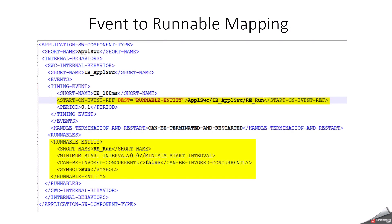This is a simple example of how event-to-runnable mapping can happen. Here I have an application software component internal behavior, and there is a periodic timing event called every 100 milliseconds, with one runnable entity associated with the timing event. I have named it 're_run'. So the event has a tight coupling with the runnable entity, but this event should be mapped with the task — task, event, and runnable entity. This is just an example of how event-to-runnable mapping can happen.